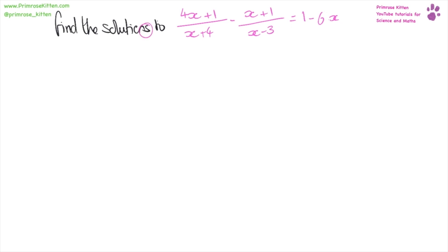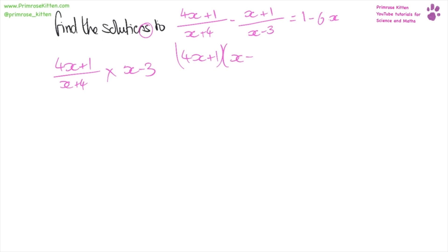So the first thing we need to do is cross multiply so we can actually do the minusing. We're going to end up with four x plus one over x plus four multiplied by x minus three, giving us four x plus one multiplied by x minus three, which gives us four x squared plus x minus 12x minus three. Tidying that up: four x squared minus 11x minus three.